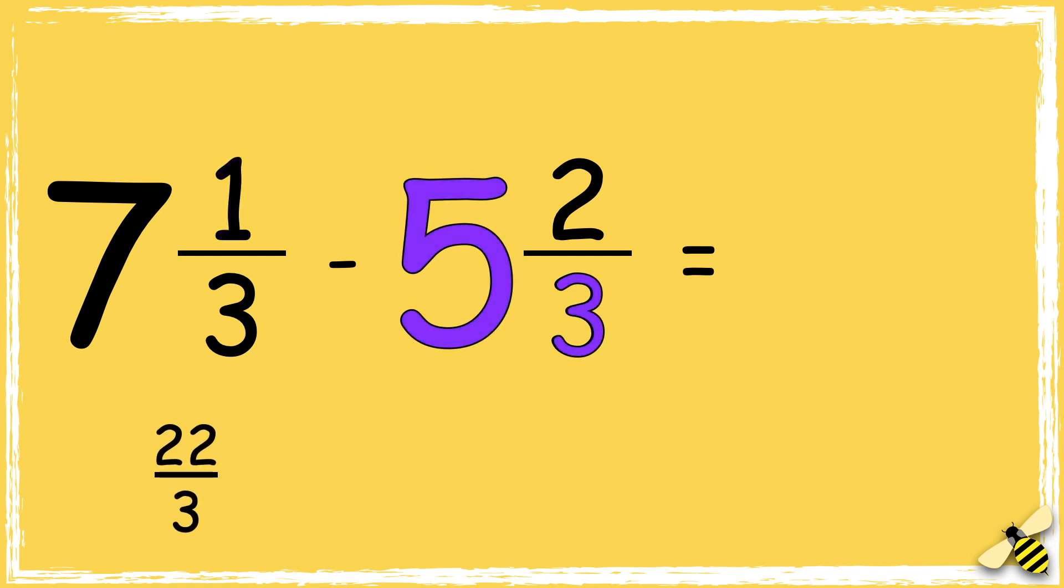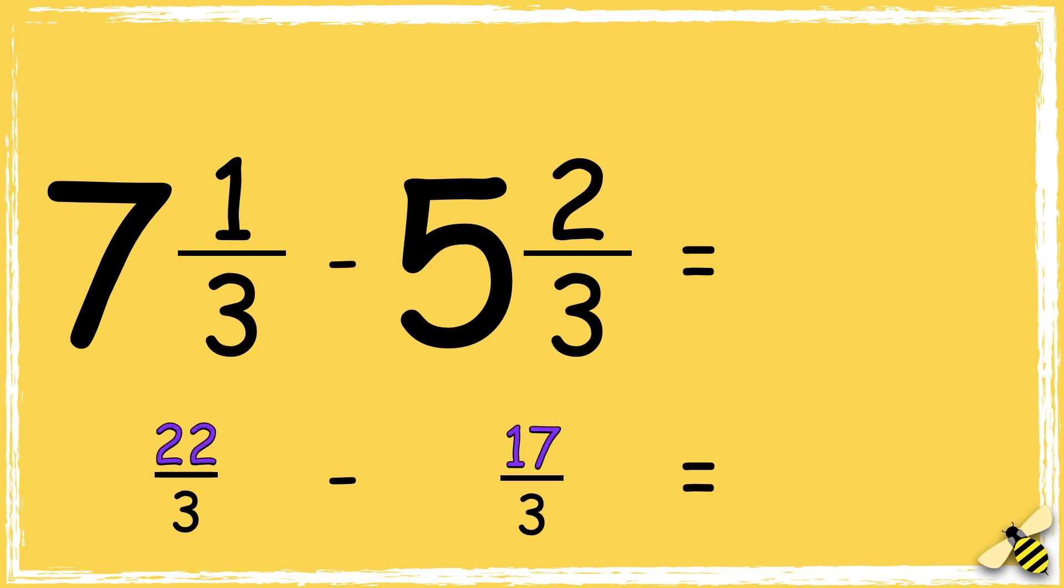Five times three is fifteen, fifteen add two is seventeen. So now I can subtract the numerators: twenty-two take away seventeen equals five.